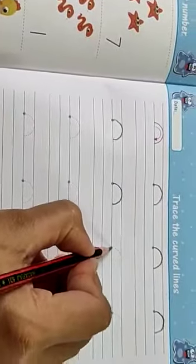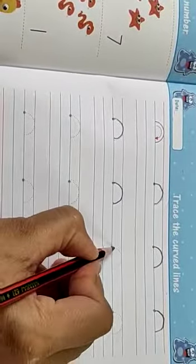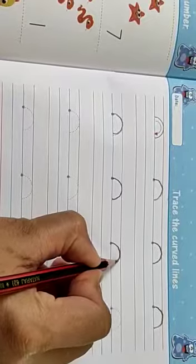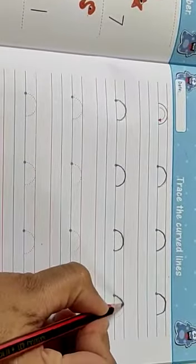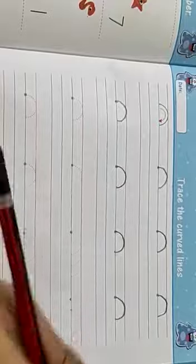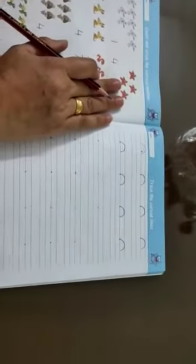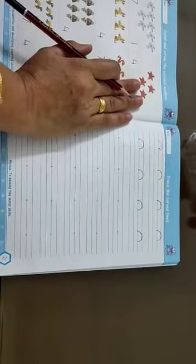So this is backward or downward curved line. So what is the function of these curved lines? These curved lines will help the child in tracing numbers which have curves like number 2, number 3, number 5, number 6.